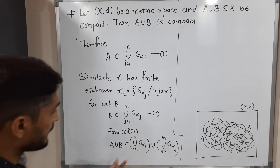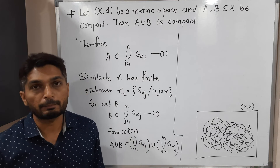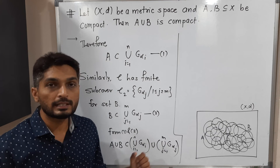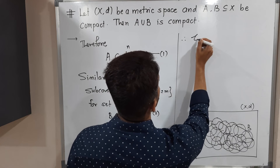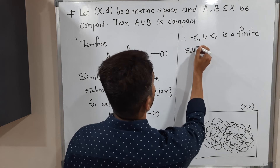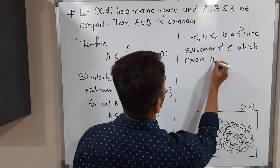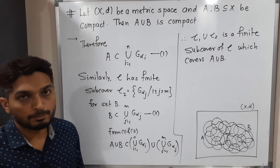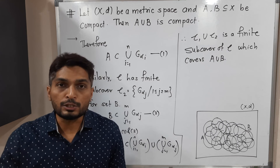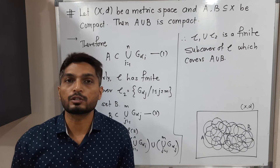The first collection was script C1 and the second collection was script C2. Taking their union, C1∪C2 is a finite subcover of script C which covers A∪B, since it contains only n + m number of sets. So we started with an arbitrary open cover of A∪B and obtained its finite subcover, also covering A∪B.